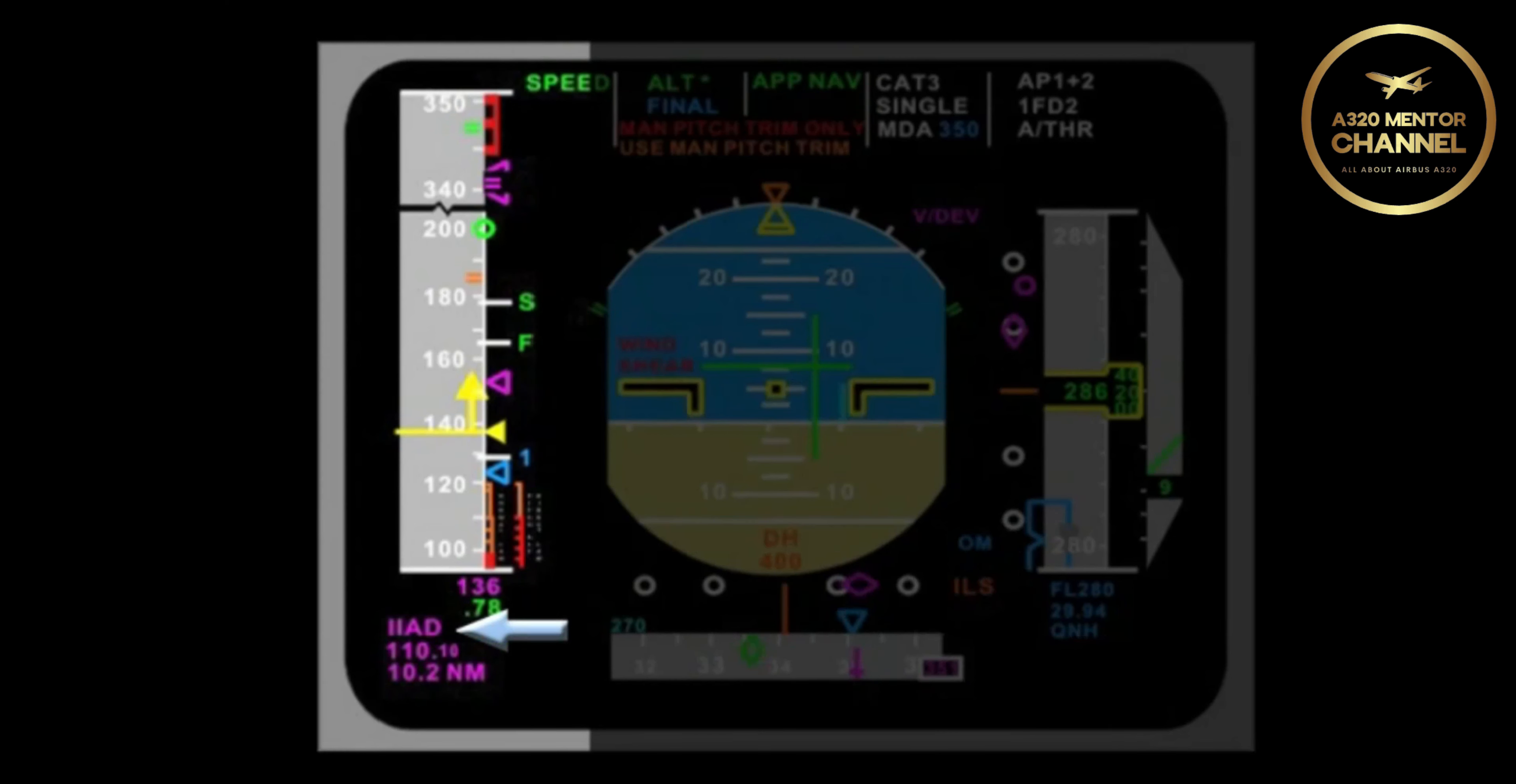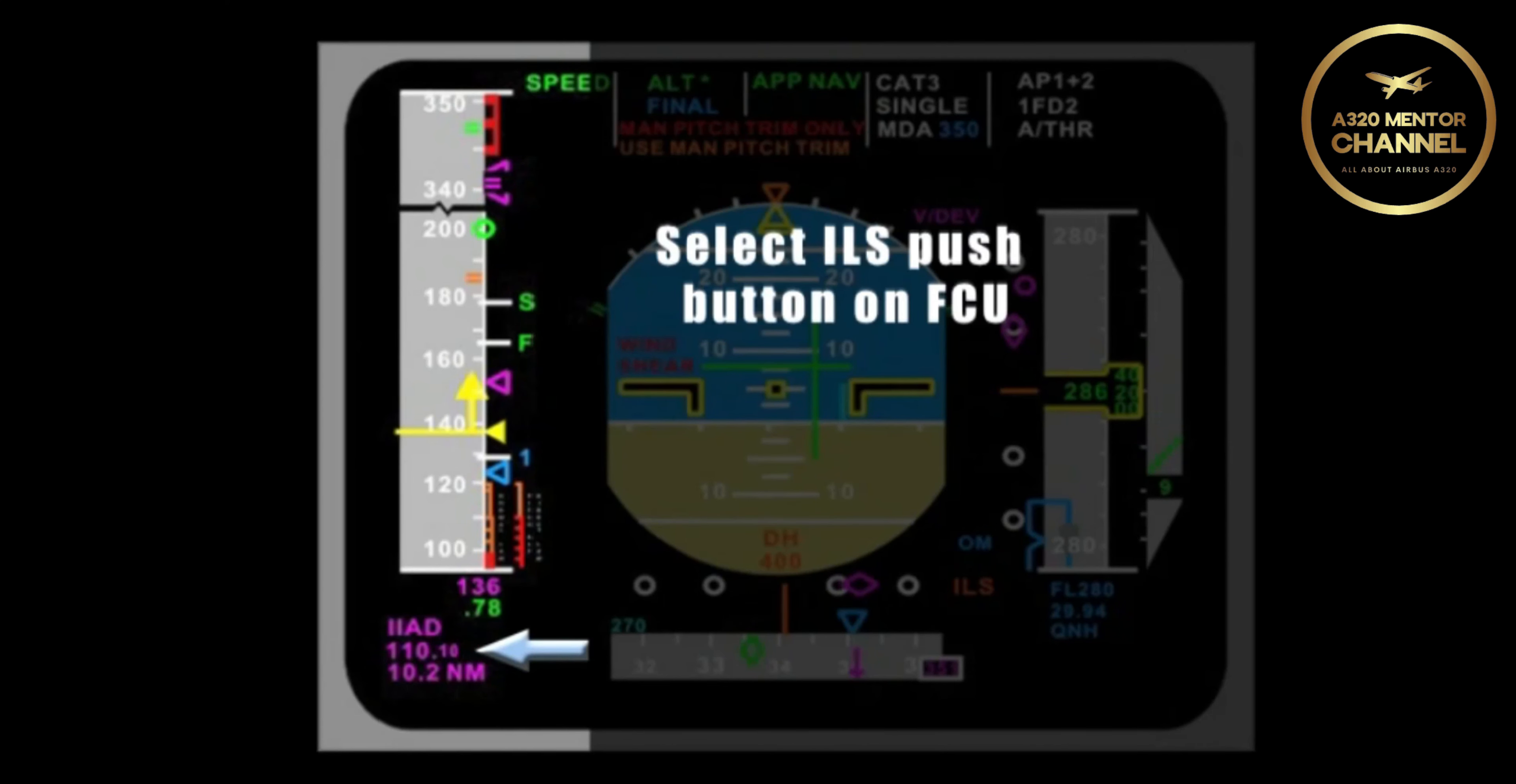There is the identifier IIAD, which of course is Washington Dulles, and the 110.1. How can the pilot get that display? First, I must select the ILS push button on the FCU. Now it will display the localizer and glide slope scales, but also the identifier.